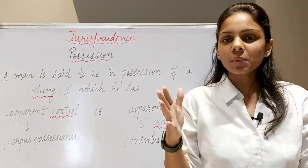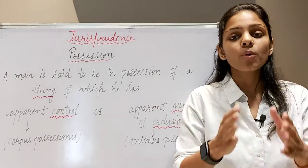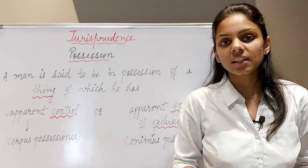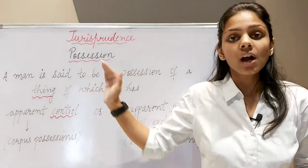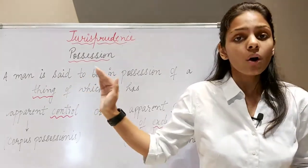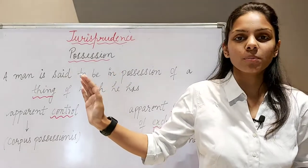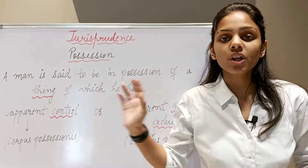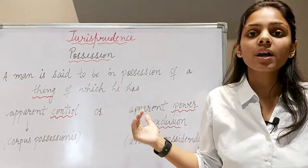Isko bohut saray parts mein divide karke discuss karayenge. By the end of this lecture aapko possession ka concept bilkul clear ho jayega. Sab se pehle, jab koi bhi insaan kisi bhi cheez ki possession mein hota hai — woh jo cheez hai woh koi bhi ho sakti hai, movable or immovable. Now we will be dividing this definition into two parts: first is apparent control, and second is apparent power of exclusion.